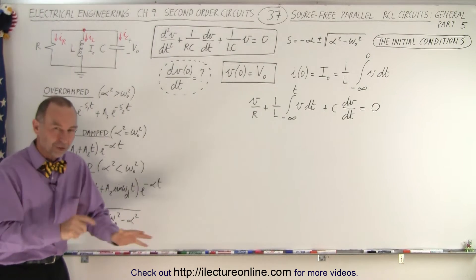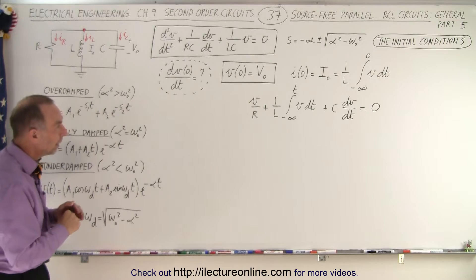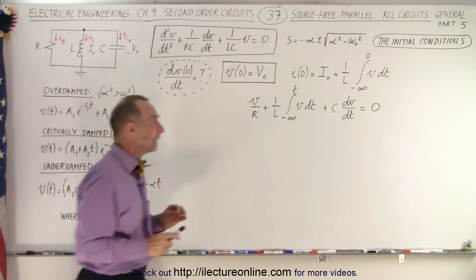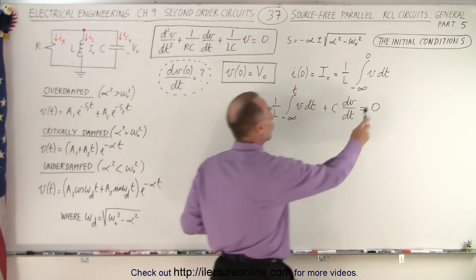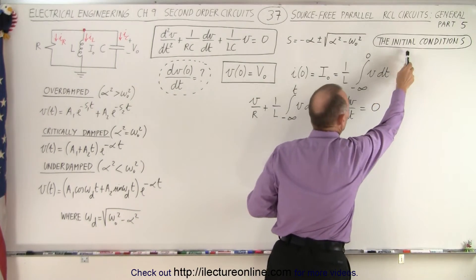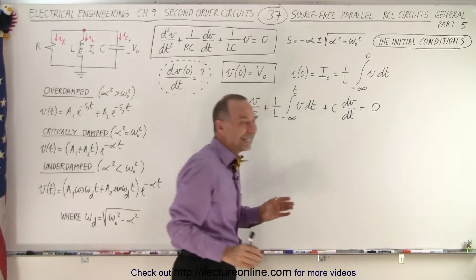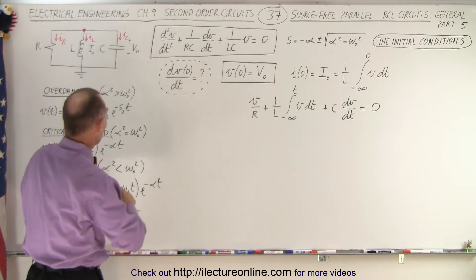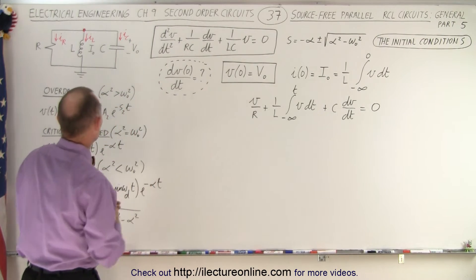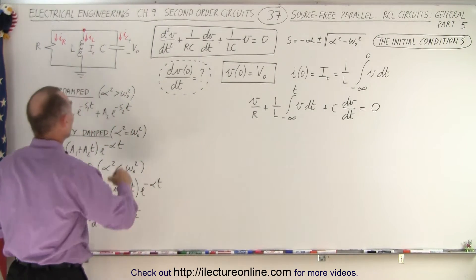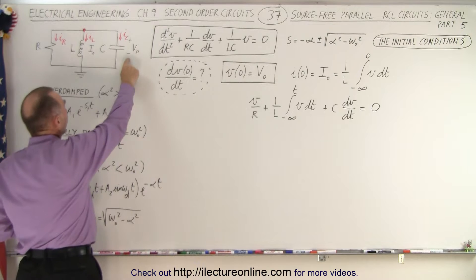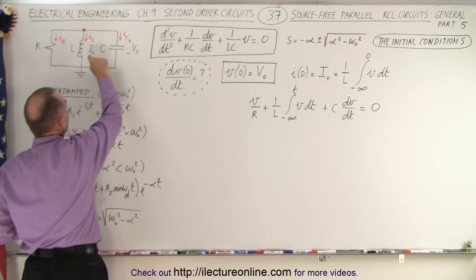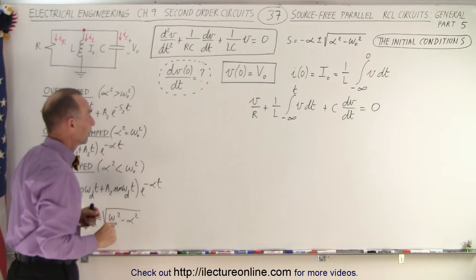Now we're going to show you some examples of how to do that, but before we do that we want to take a general approach to understanding the initial conditions in the circuit. So what are the two initial conditions? Well we have an initial voltage across the capacitor and an initial current through the inductor.